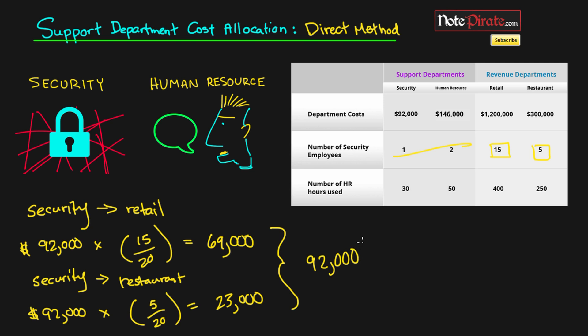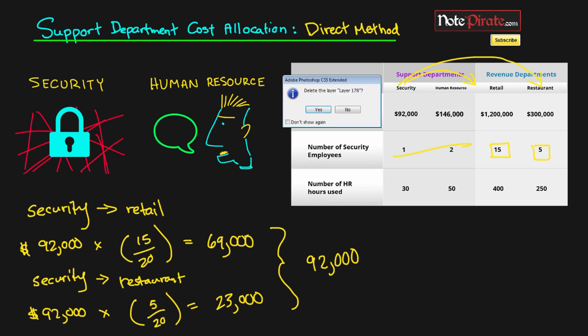We can confirm our work by seeing that $69,000 and $23,000 add up to our original $92,000 cost for the Security department. So we've allocated Security to Retail and Security to Restaurant. Now let's go ahead and allocate the HR department.